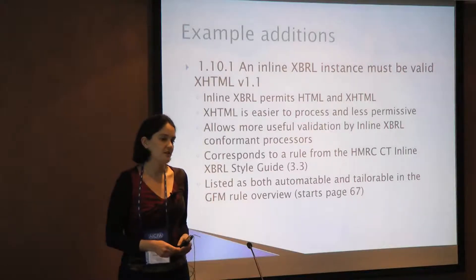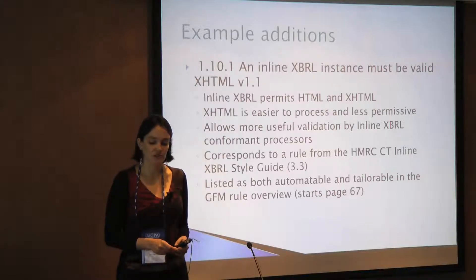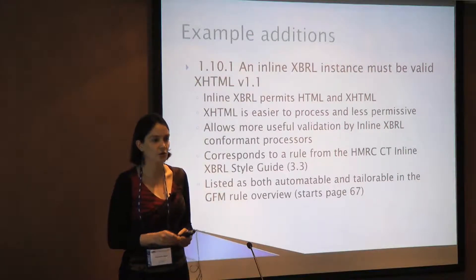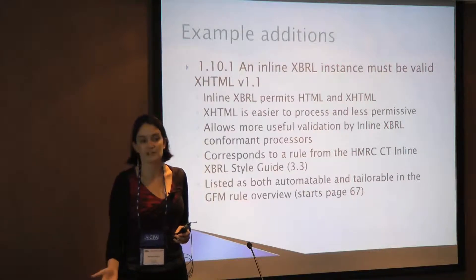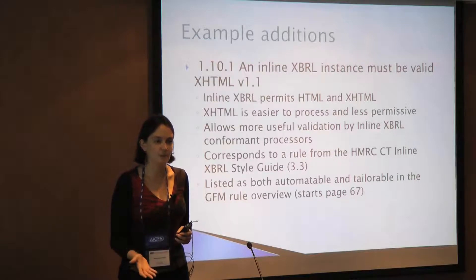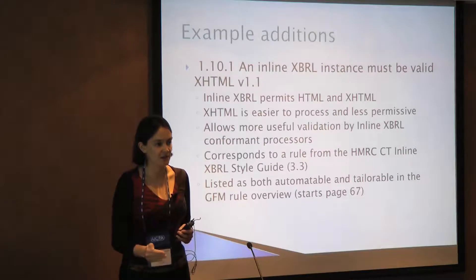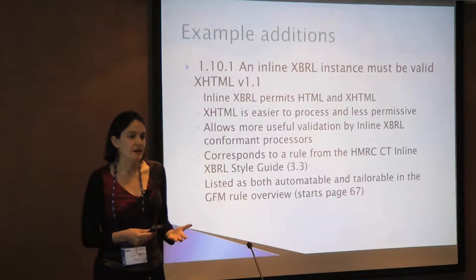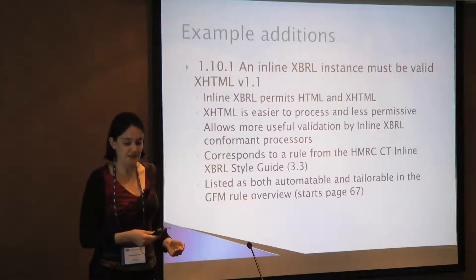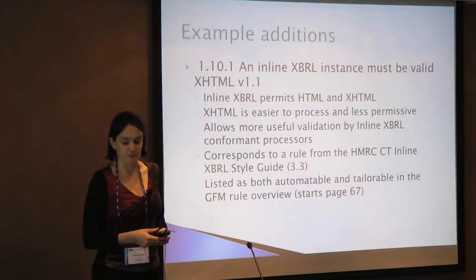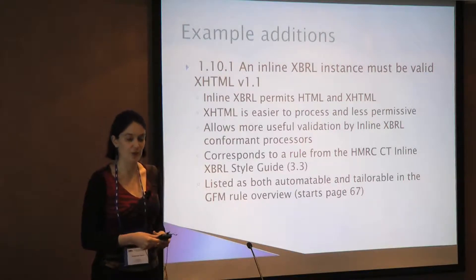Here are some example additions to go through so you can see the kind of thing that's been put into the document. This first one is a basic restriction on what kind of HTML you can use when submitting your inline XBRL document. It's from one of HMRC's rules, and in general it's thinking in the way a regulator might think — what can we do to restrict the work we've got to do in our system, and what can we do to make files validatable? So in this case, let's restrict it to XHTML. We can parse XHTML within the inline specification, we have the modular schemas available to properly validate it, it's easier to process, and it's generally less permissive — there's not as much formatting and formatting manipulation you can do with XHTML as you can with HTML. This corresponds to rule 3.3 from the XBRL style guide for HMRC. The GFM also provides an index to all the rules with columns indicating whether the writers have thought a rule is probably automatable, and whether a regulator might want to tailor this rule since it probably won't suit all regulatory systems.